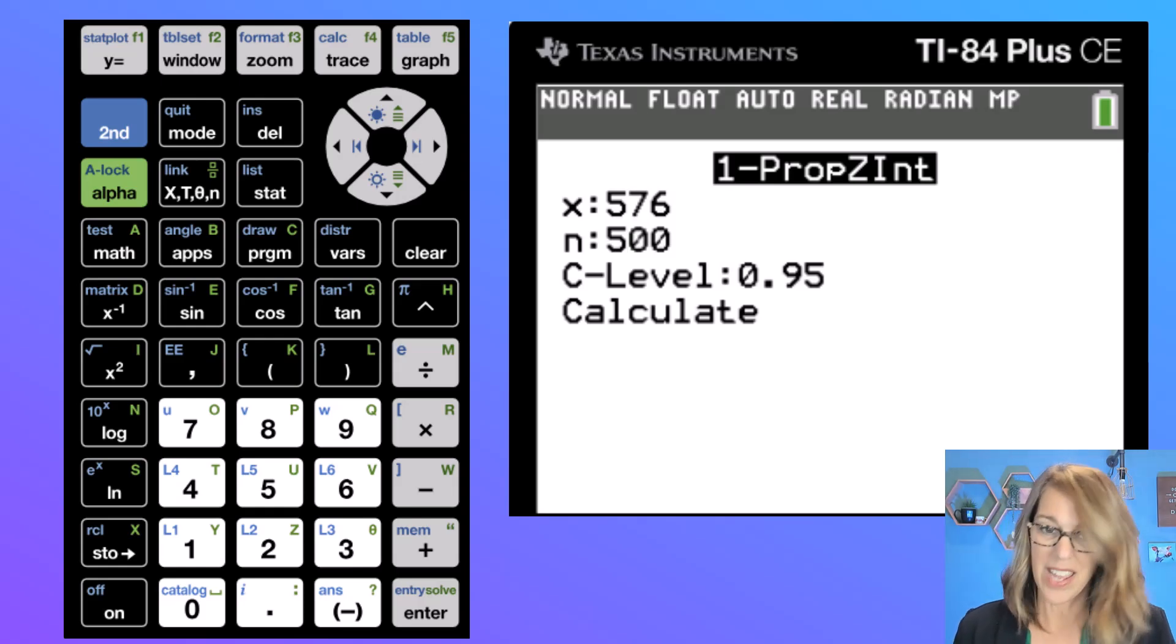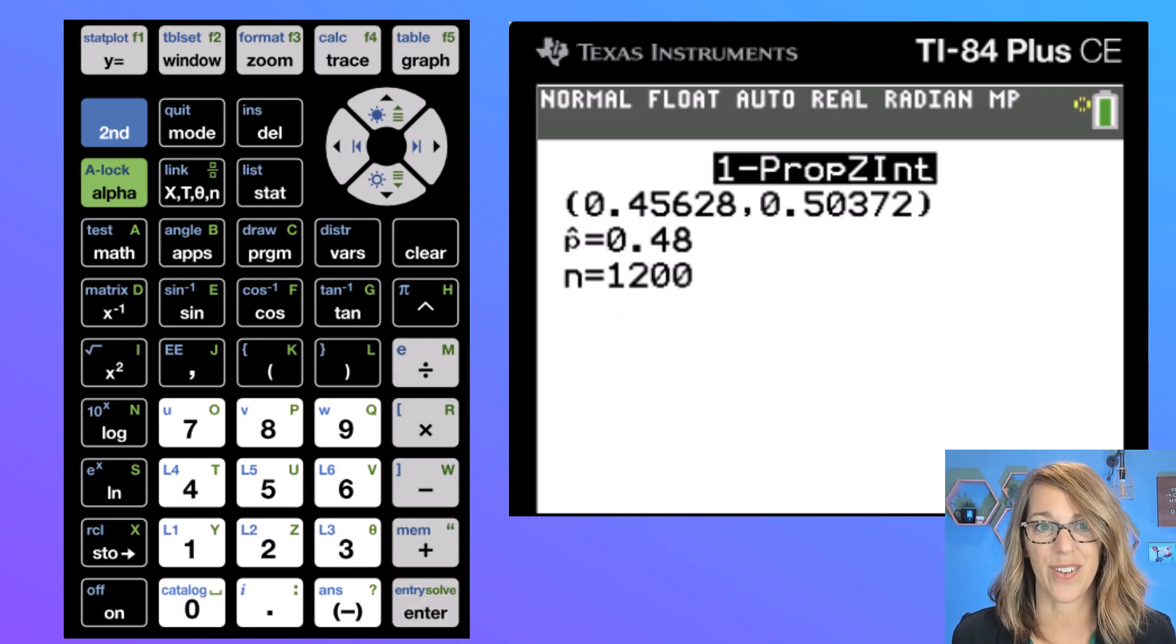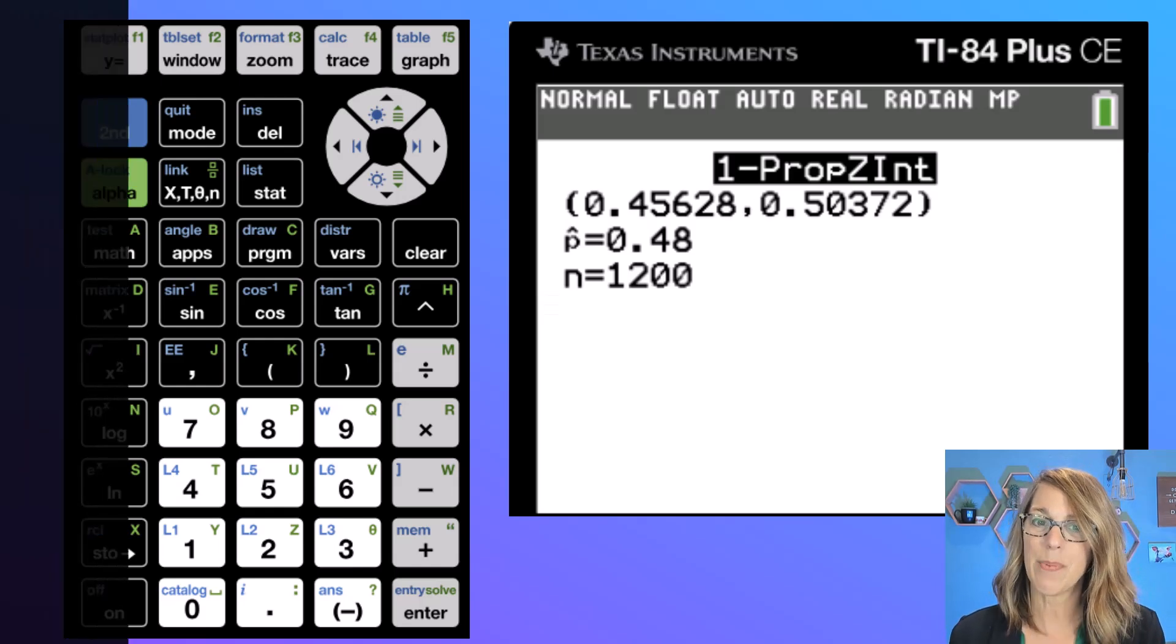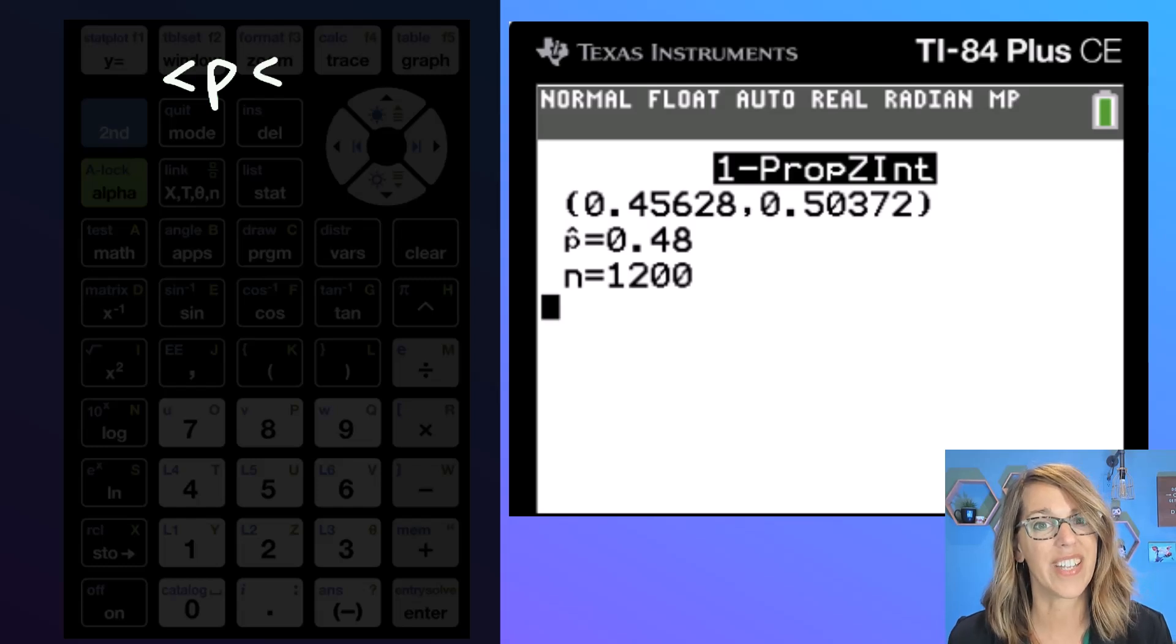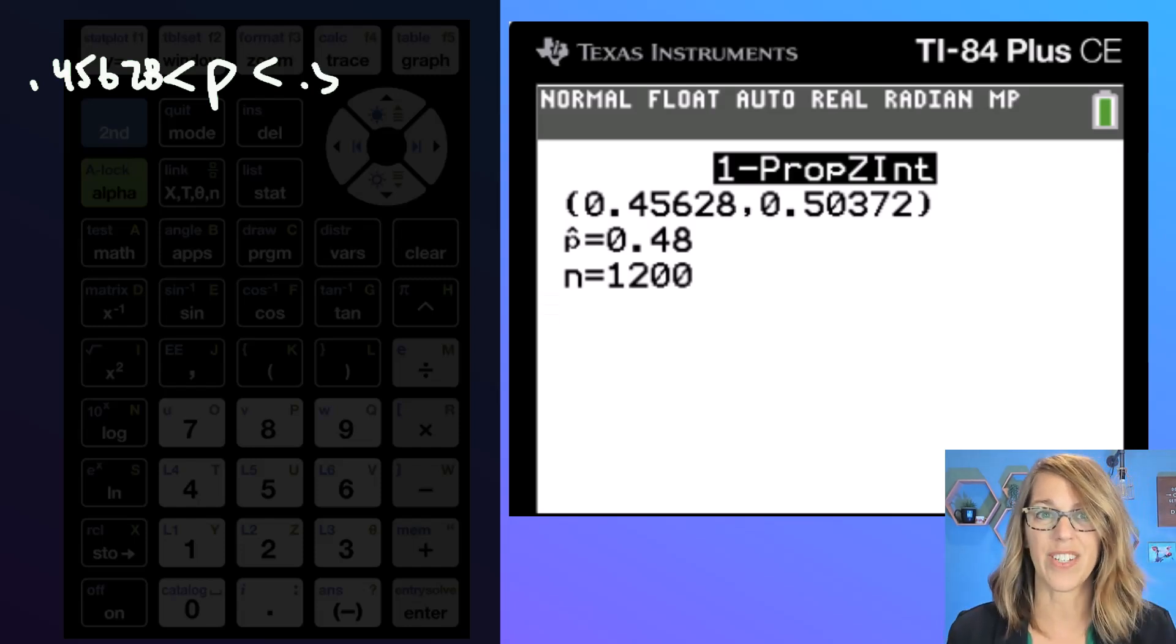In this example n was 1200 and we're not doing a 95% confidence interval. We are doing a 90% confidence interval and we are 90% sure that our actual proportion of voters lives between 0.45628 and 0.50372.